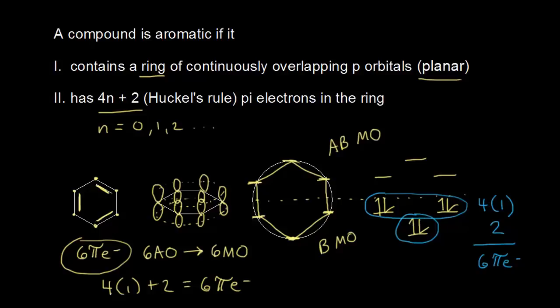And so benzene is aromatic. It follows our different criteria. In the next few videos, we're going to look at several other examples of aromatic compounds and ions.